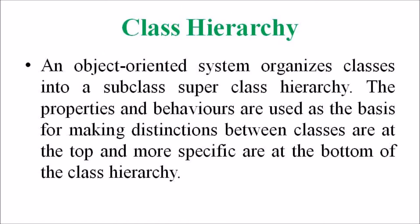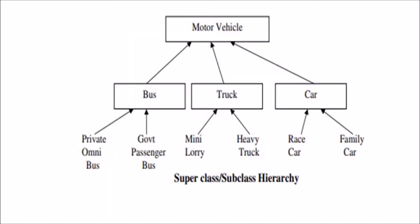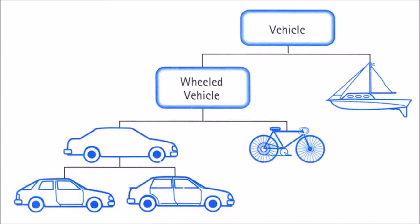When we are considering class hierarchy, an object-oriented system organizes classes into subclasses and superclasses in a hierarchy. The properties and behaviors used as the basis for making distinctions between classes are at the top, and more specific classes are at the bottom of the class hierarchy. A subclass inherits all the properties and methods defined in its superclass.